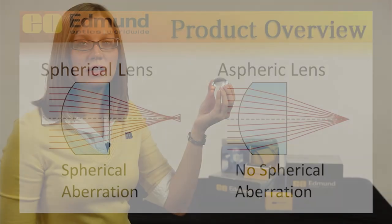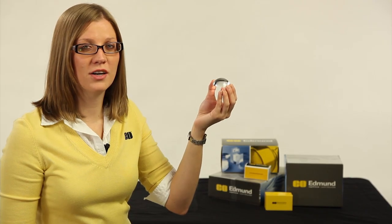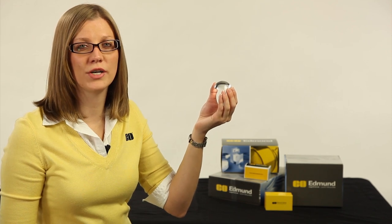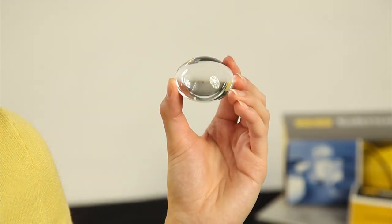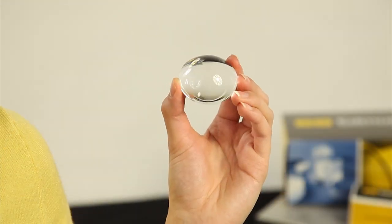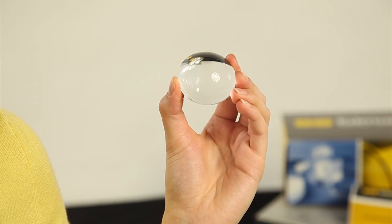An aspheric lens features a surface whose radius changes with distance from the optical axis. This unique feature allows aspheric lenses to eliminate spherical aberration and greatly reduce other aberrations, delivering improved optical performance.